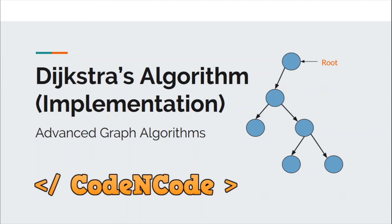Hello guys, this is Code and Code, and this is the video editorial for the implementation of Dijkstra's algorithm. In the previous lecture I've already explained how Dijkstra's algorithm works, so in this lecture we are going to implement Dijkstra's algorithm using a priority queue. There are many ways you can implement Dijkstra's algorithm — one way is to use a set, but we are going to use a priority queue.